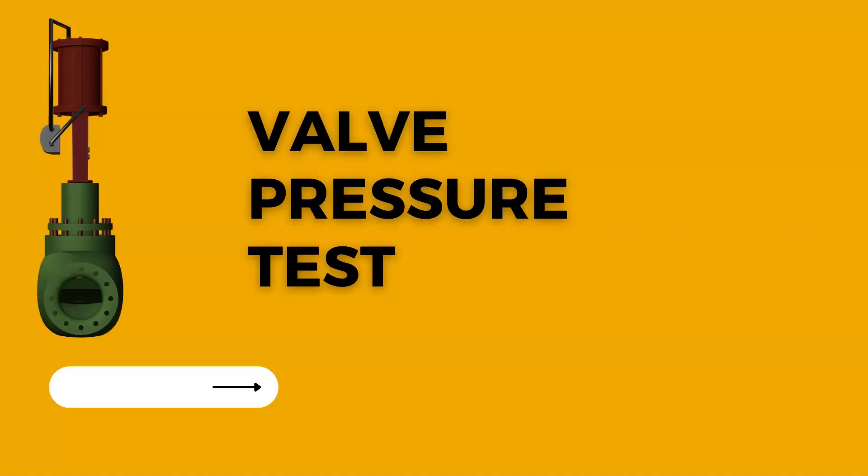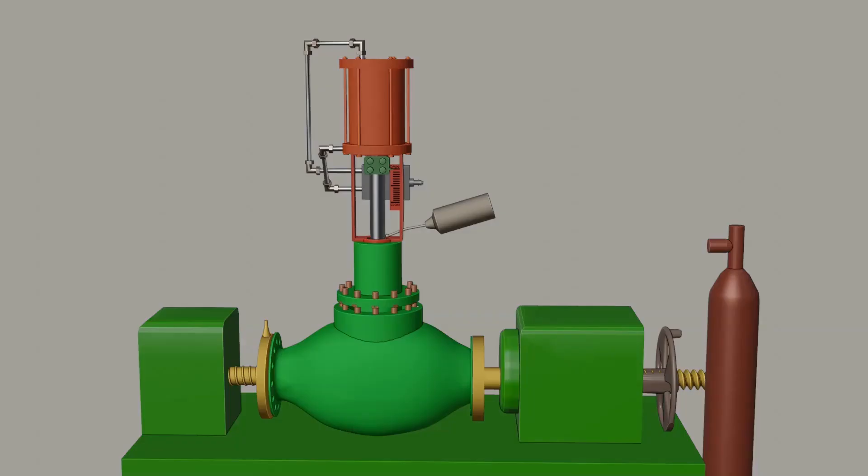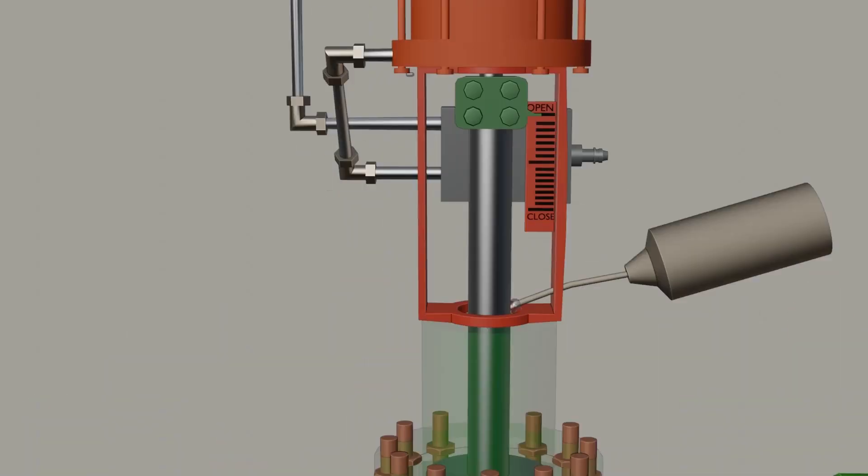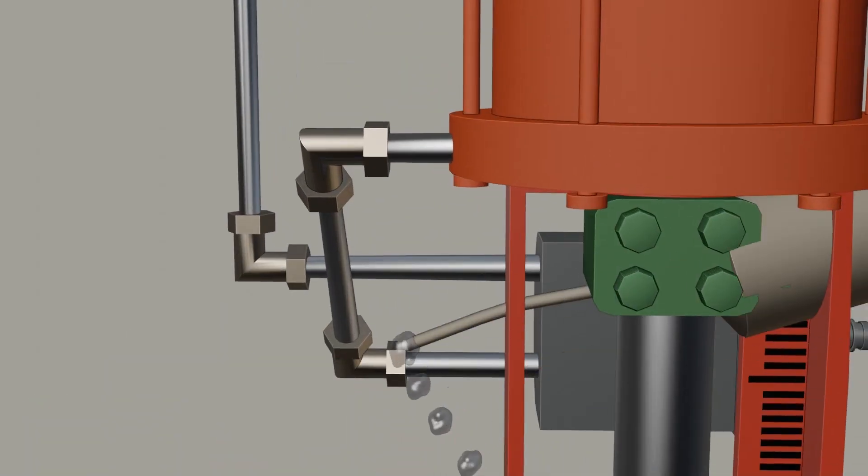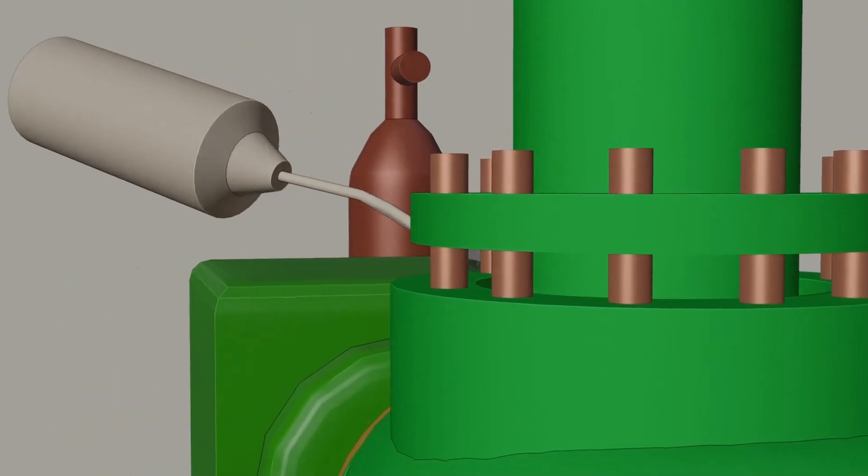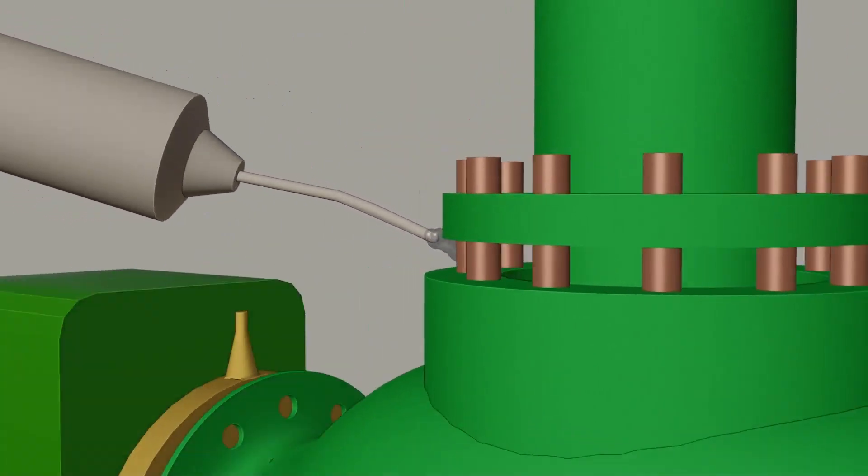We will check the body and bonnet leak test and stem packing leak test. First, we raise the pressure body and bonnet with the valve open condition. Then pour soap on the stem packing area. After that, pour soap oil into the body and bonnet joint. Make sure there is no bubble form.